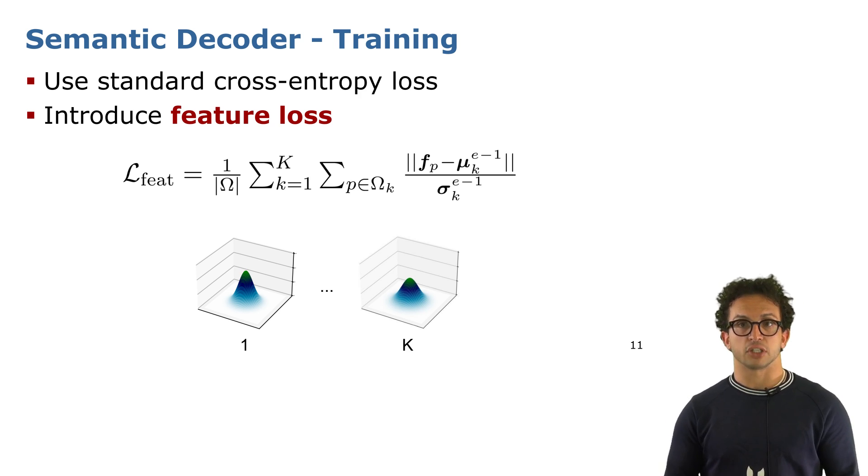This feature loss function basically tries to make the feature f that we predict at a certain pixel p as close as possible to the class descriptor I mentioned before. The class descriptor in the formula is indicated by mu.